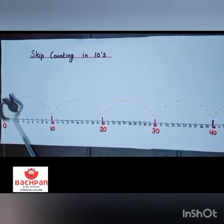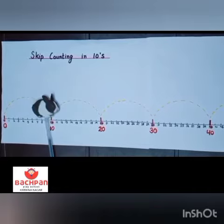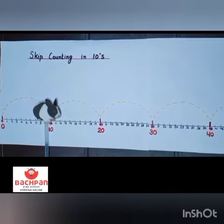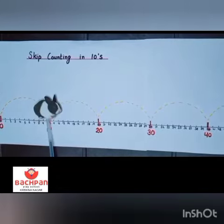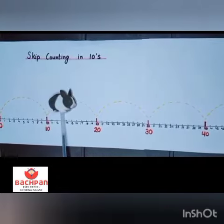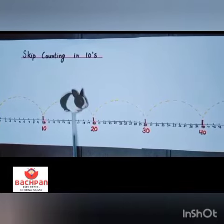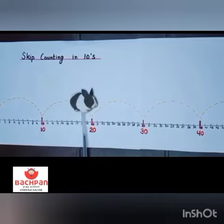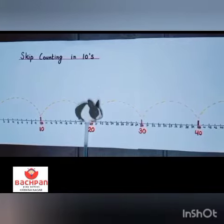Look at the rabbit. Where is it? It is on number 10. Here it skips 9 numbers: 11, 12, 13, 14, 15, 16, 17, 18, 19 — and hops to number 20.